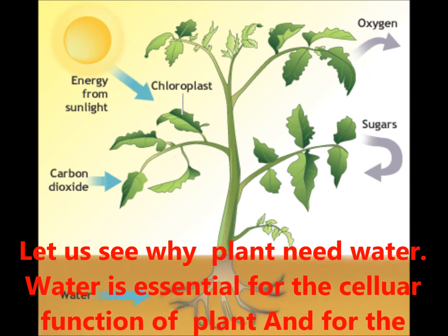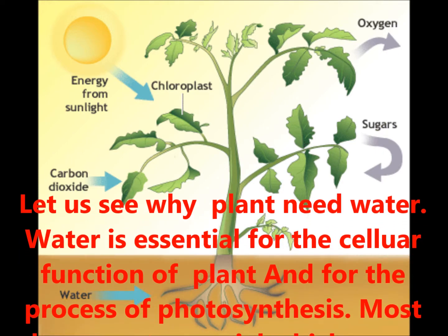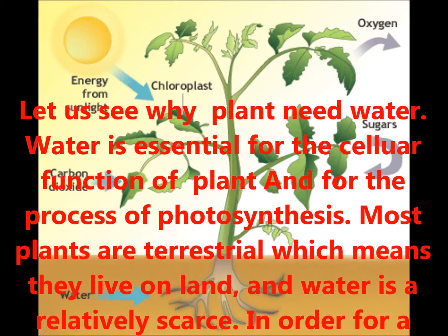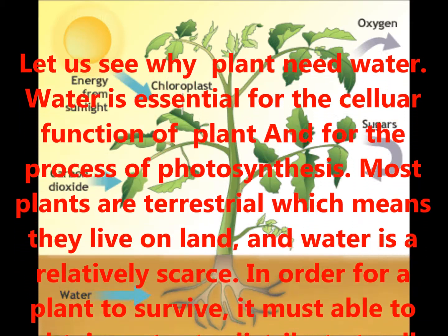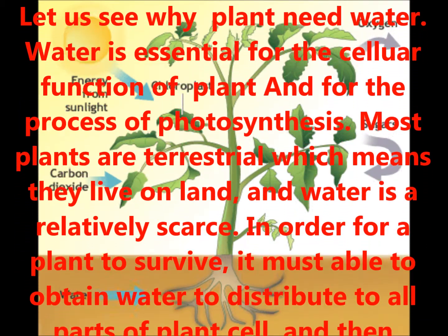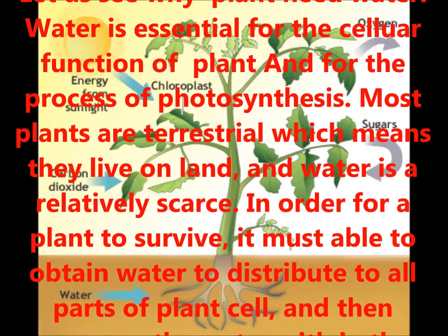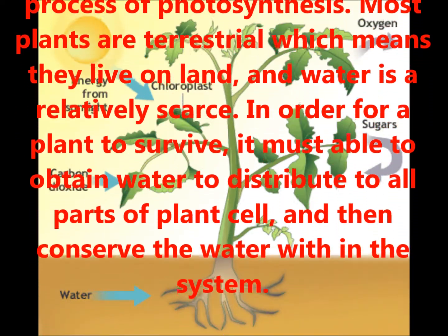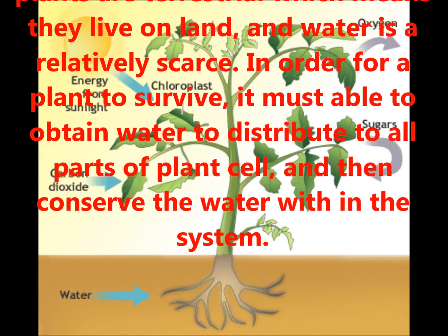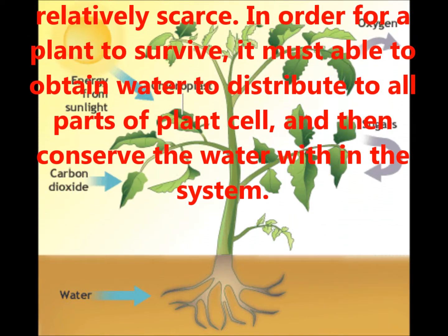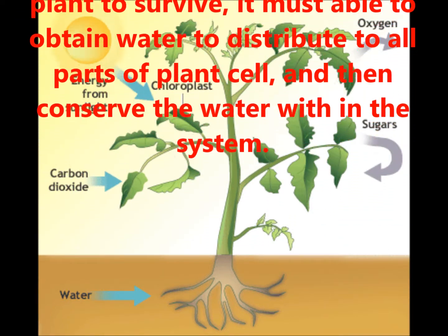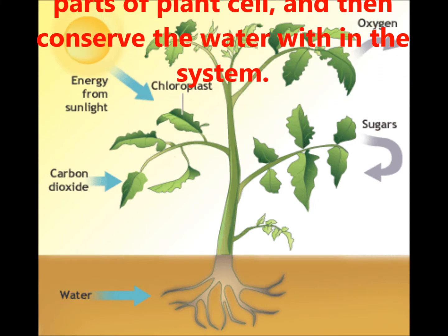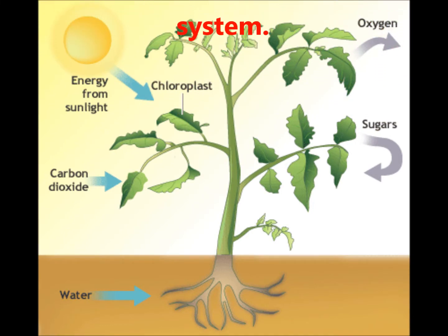Water is essential for the cellular function of plants and the process of photosynthesis. Most plants are terrestrial, which means they live on land and water is relatively scarce. In order for a plant to survive, it must be able to obtain water and distribute it to all parts of the plant cell, and then conserve the water within the system. So for this purpose, water is essential for the plant body.